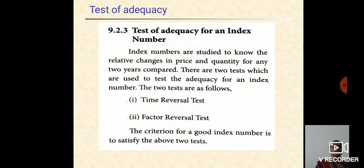Now, see the test of adequacy. The test of adequacy for index numbers are tested by two tests: first one is time reversal test, and the second one is factor reversal test.